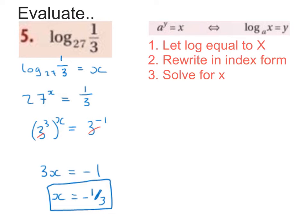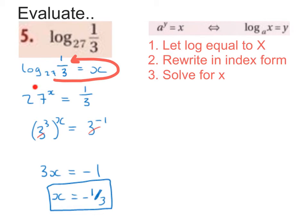Step 1: I'm going to let my log equal to x. Step 2: I need to rewrite in index form. I'm going to use my scorpion tail method to help me with this. I'm going to start at base 27. My scorpion tail is going to go around the x, so it's going to be to the power of x, past the equal sign, and I'm going to end up at 1 third. So 27 to the power of x is equal to 1 third.